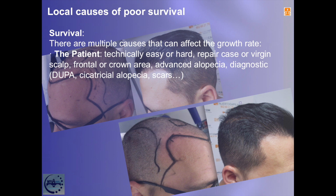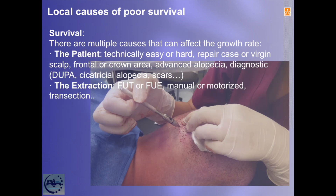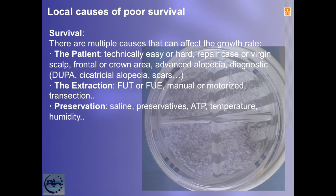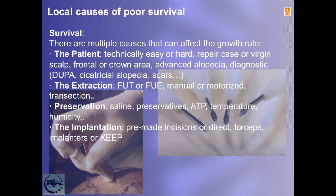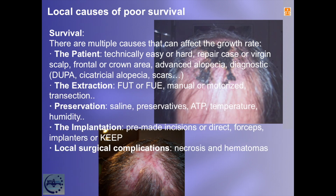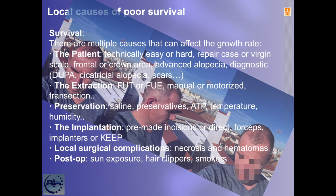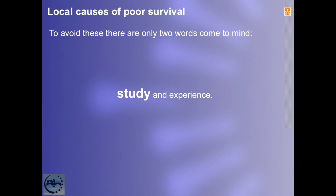There are multiple causes that can affect the growth rate: (1) the patient — technically easy or hard, repair case or virgin scalp, frontal or crown area, advanced alopecia, or particular diagnoses like DUPA, cicatricial alopecia, or scars; (2) the extraction — FUT or FUE, manual versus motorized, transection; (3) preservation — saline, preservatives, ATP, temperature, humidity; (4) implantation — premade incisions or direct, forceps and planters or KEEP; (5) local surgical complications — necrosis and hematomas; (6) post-op — sun exposure, hair clippers, smoking. To avoid these causes, only two words come to mind: study and experience.